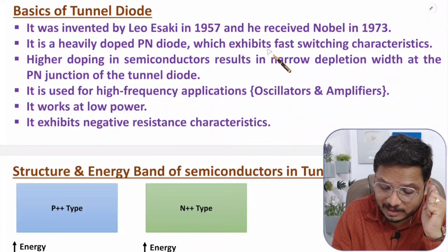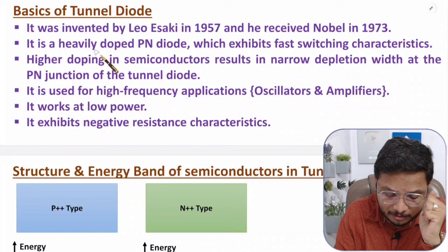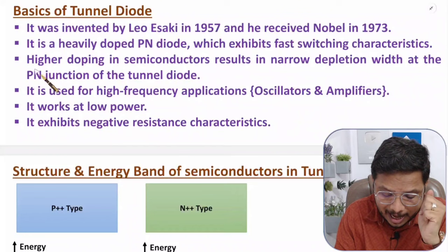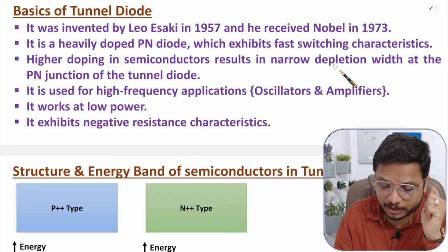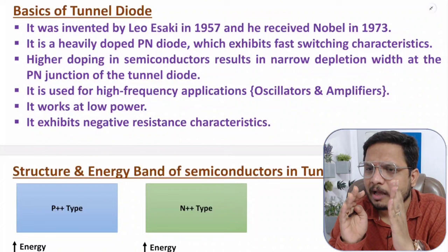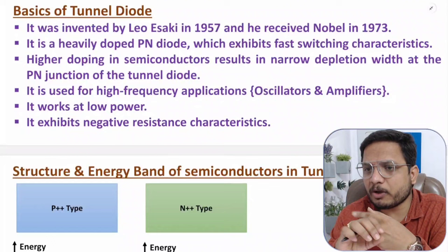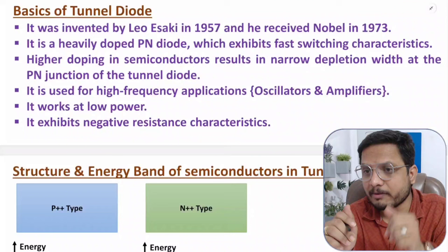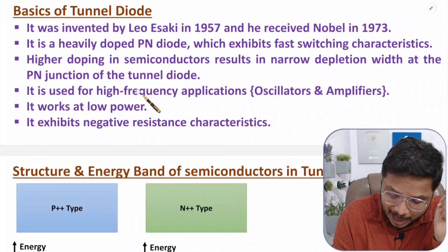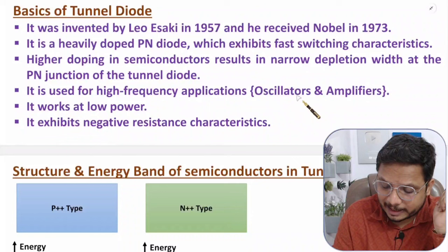Tunnel diode is a heavily doped PN diode which exhibits fast switching characteristics. Due to higher doping concentration in the semiconductor material, we have a narrow depletion width. In tunnel diode we provide extreme doping concentration compared to a normal PN junction diode, and as doping concentration is high, the depletion width is very narrow. It is used for high frequency applications — as an oscillator and amplifier.